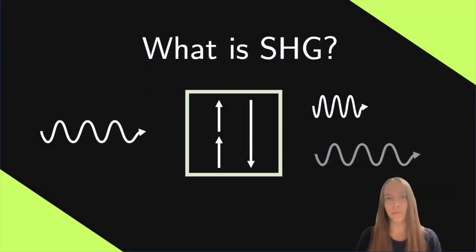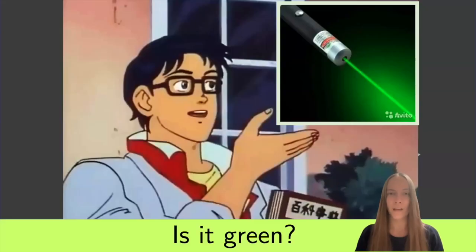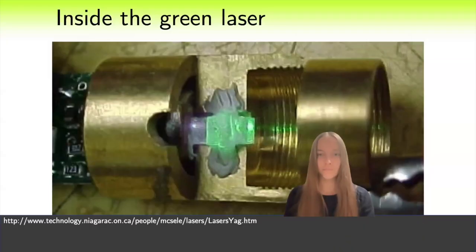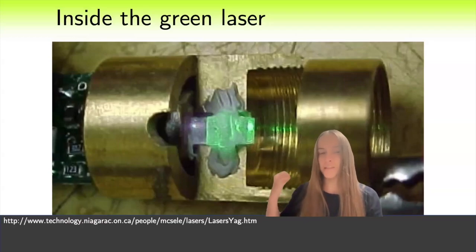In this video I will briefly tell you what is second harmonic generation. Are you sure that the green laser pointer is indeed green? Let's see what's inside it. You can see that the light becomes green only after passing through some strange crystal. What is this?